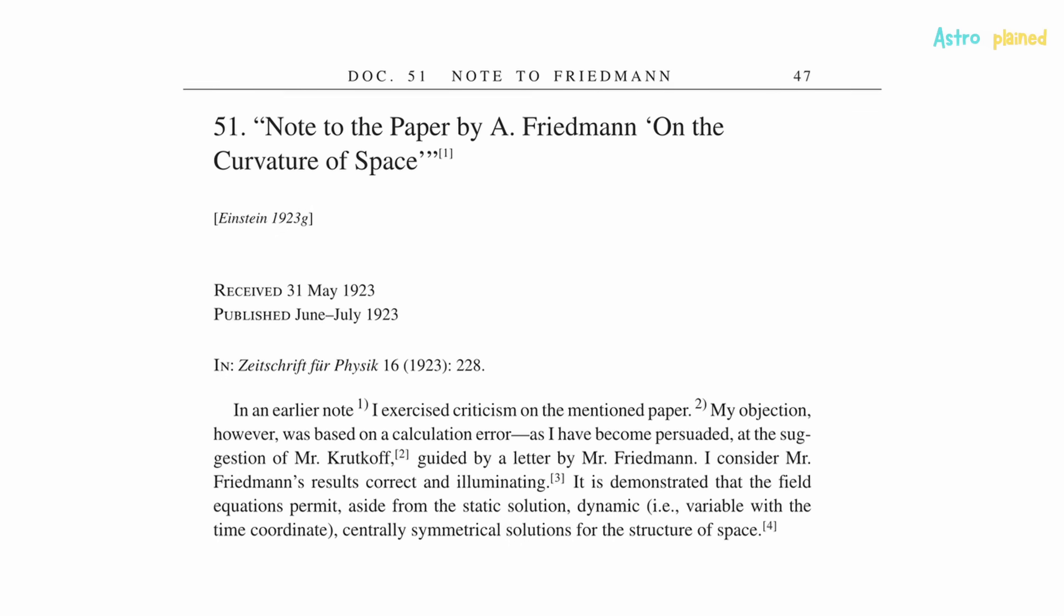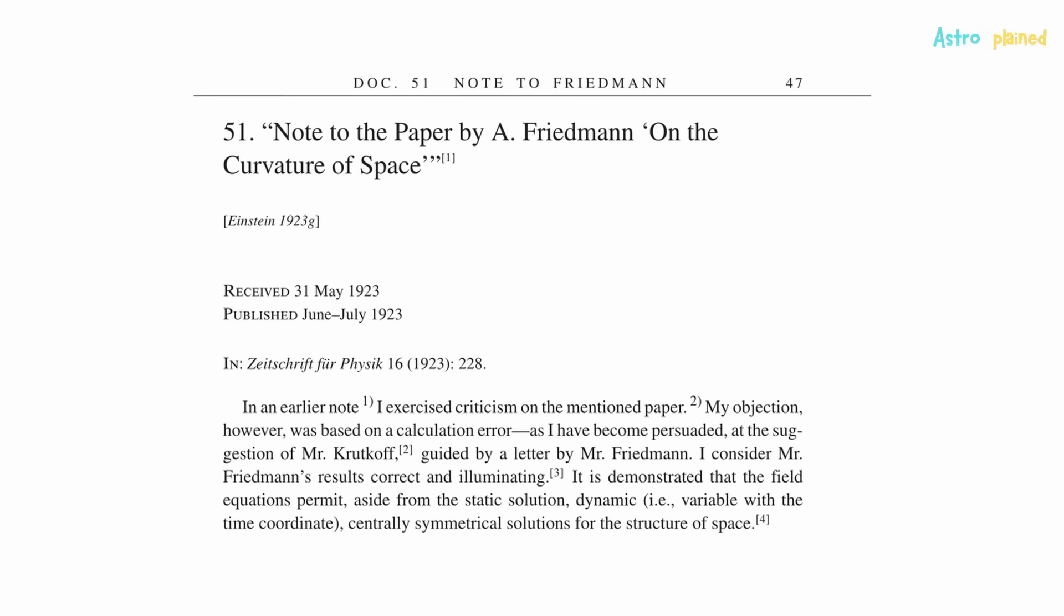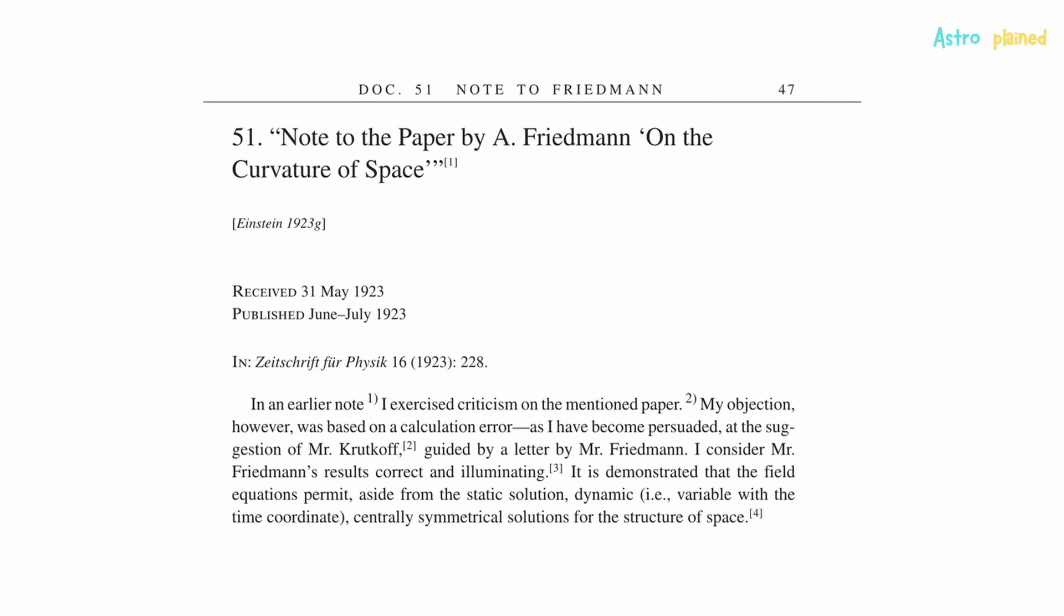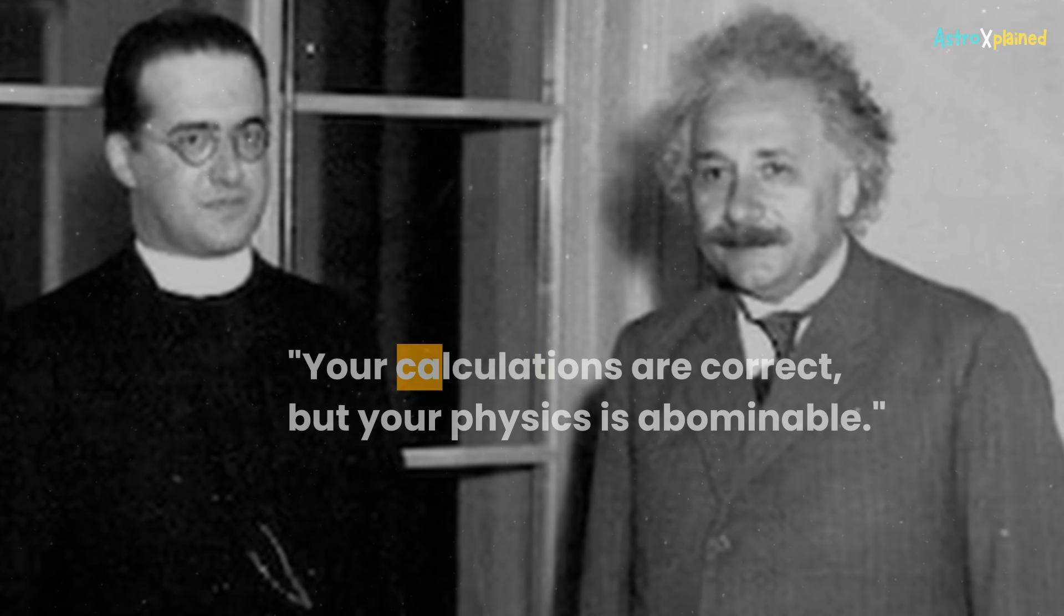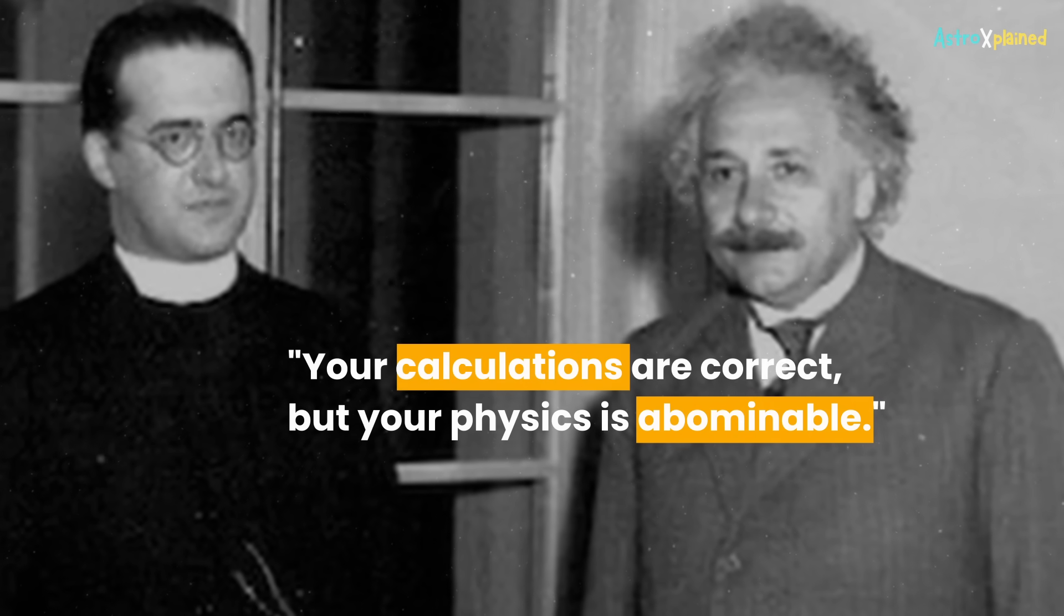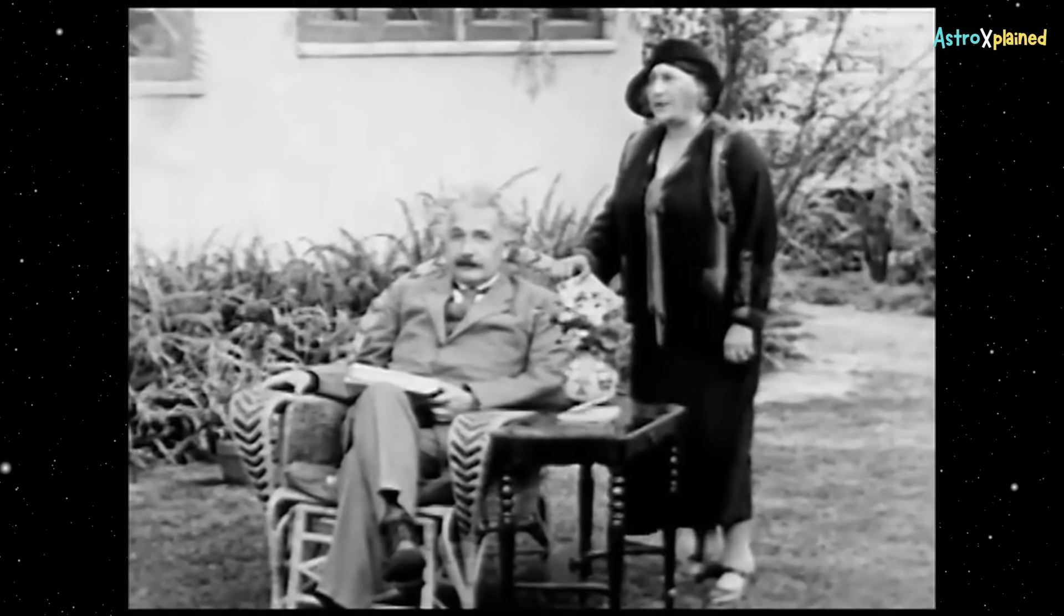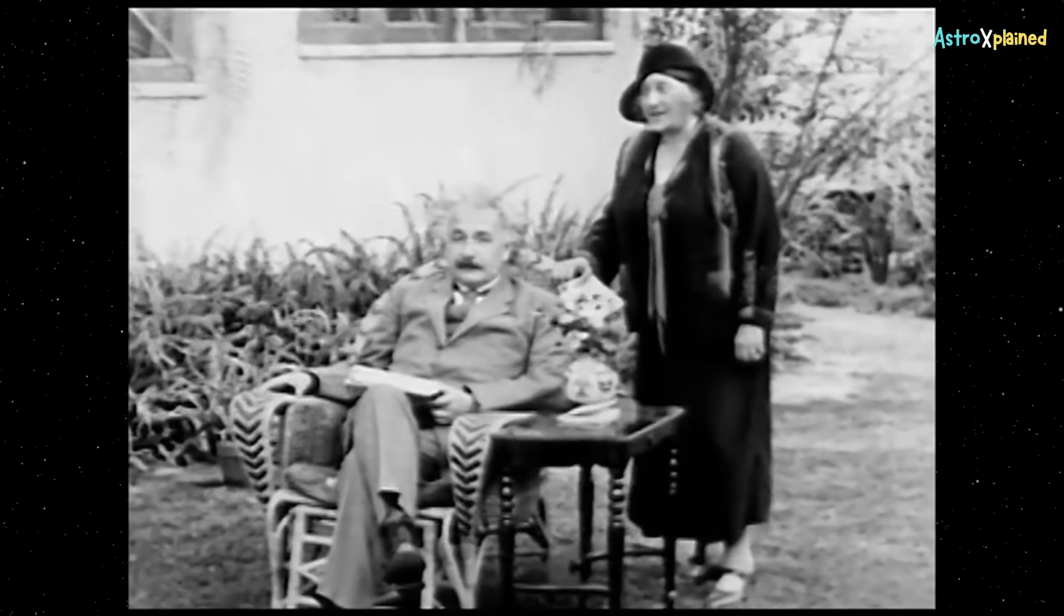He admitted his mistake but remained unconvinced about the physical reality of a dynamic universe. When Le Maître presented his model at the 1927 Solvay conference, Einstein reportedly responded, 'Your calculations are correct, but your physics is abominable.' Again, he was skeptical. Einstein still held on to the idea of a static universe and was not ready to accept cosmic expansion.